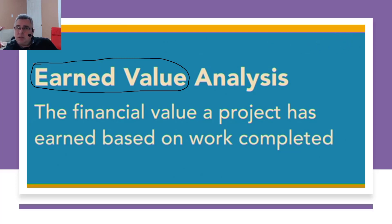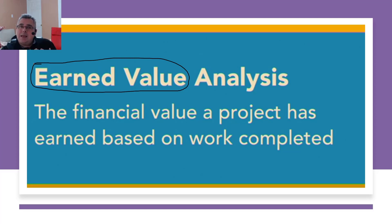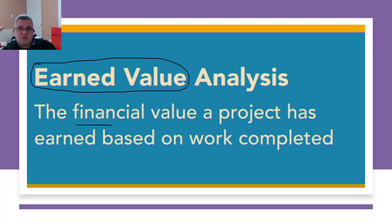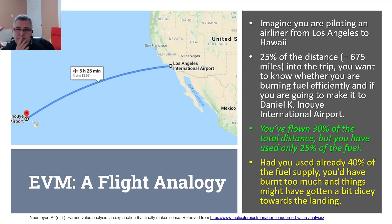That means the cost to paint each wall is 250 dollars — 250 times four equals one thousand dollars for the whole room. Once the project starts and the painter finishes the first wall, we can say the painter has earned 250 dollars to the project. So earned value is about giving a financial value to the work completed.